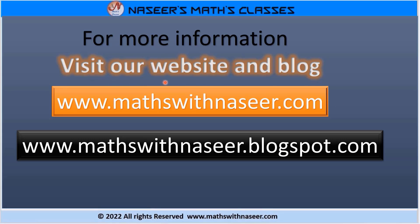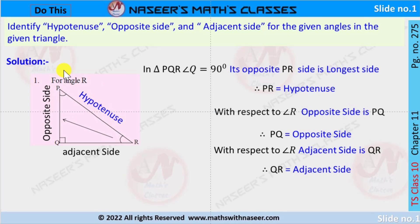For more information visit our website and blog at mathswithnaseer.com. Now we are going to solve page number 275, chapter 11, number one: identify the hypotenuse, opposite side, and adjacent side for the given angles in the given triangle.